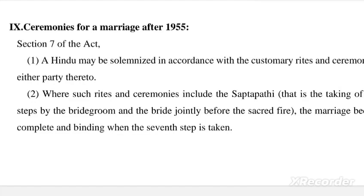Next is the registration of Hindu marriage. The steps are: first, apply to the sub-registrar; second, fill the application form by both parties; third, documents attestation — all required documents must be correct; and fourth, all conditions under sections 5 and 7 must be fulfilled. These are the steps for registration of a Hindu marriage.